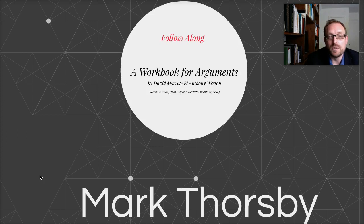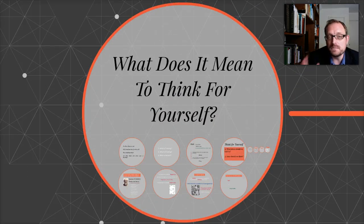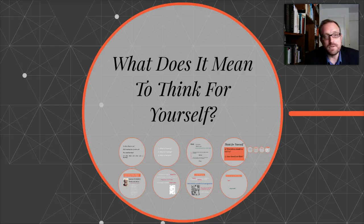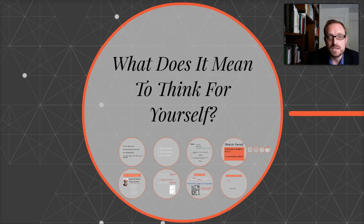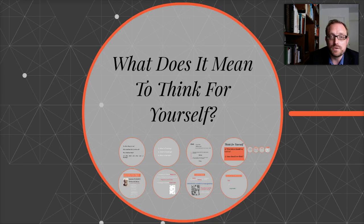Feel free to follow along. In the video today we're going to begin by asking the question: what does it mean to think for yourself? Then we're going to look at some of the rules for thinking. The book is divided into a whole series of rules — I think there's 45 or 50 rules to be a critical thinker. I'll be putting together short videos for each of these rules as we go through them in the course.